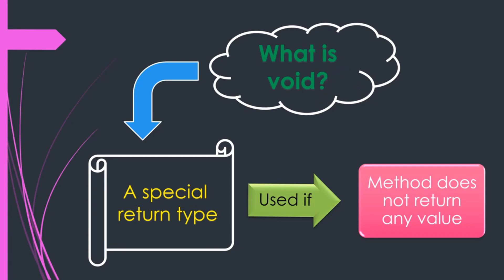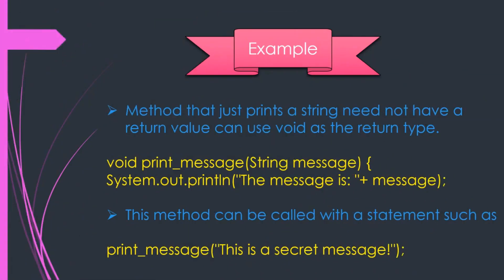Let us see this through an example. A method that just prints a string does not need a return value, so it can use void as the return type. In this example, when we only want to print a string, the method is not returning any value, so we can use void as the return type here.